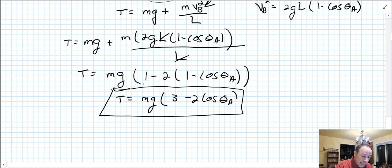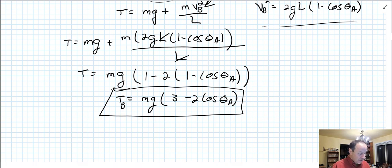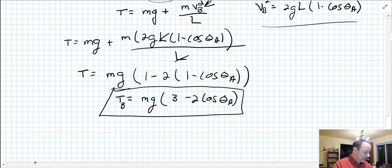So that's tension at B, because we substituted in the velocity of B. That makes that pendulum problem a lot easier to deal with using conservation of energy. That's all for this one. See you later, folks.